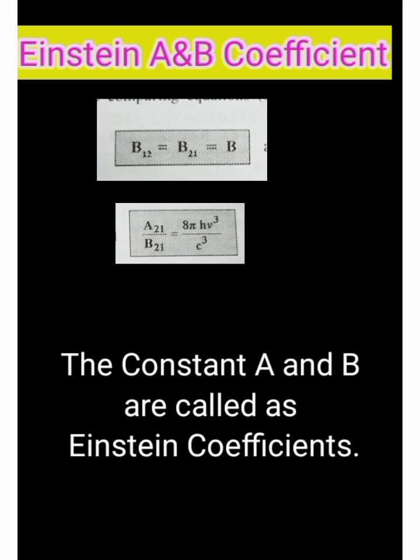The constants A and B are called as Einstein coefficients. Thank you everyone.